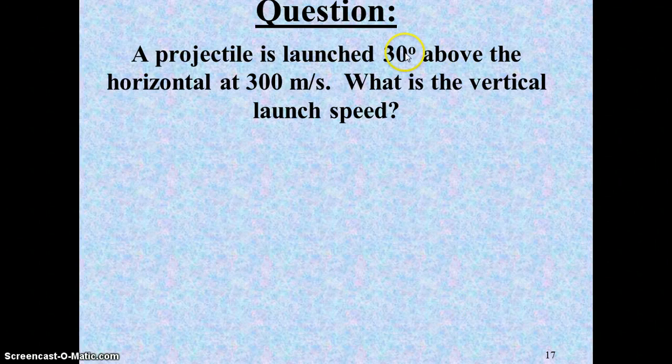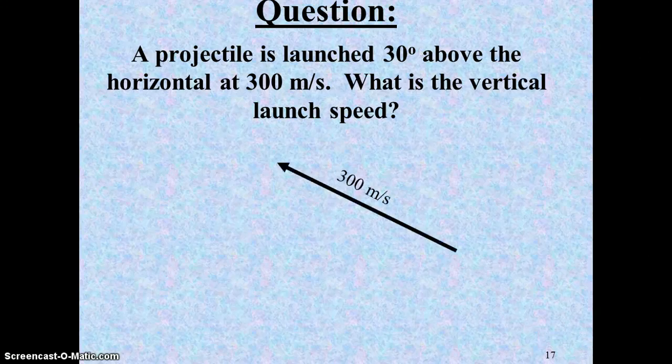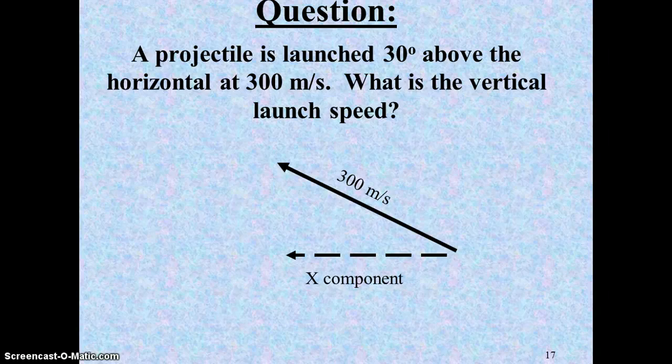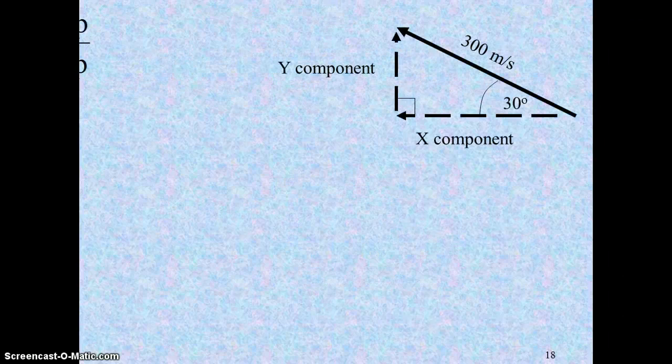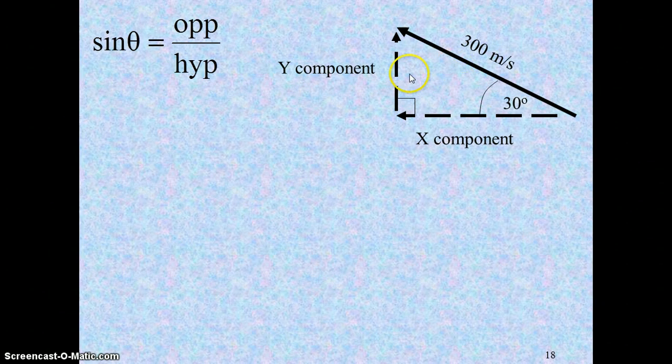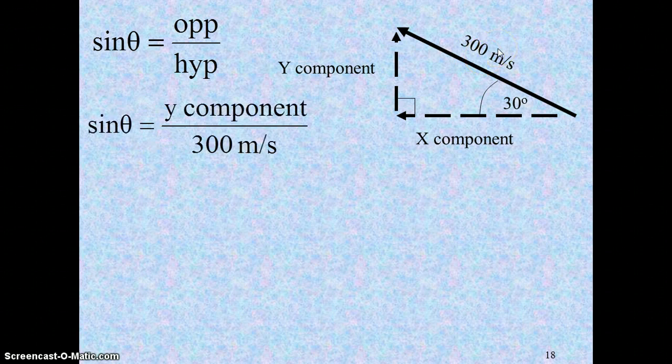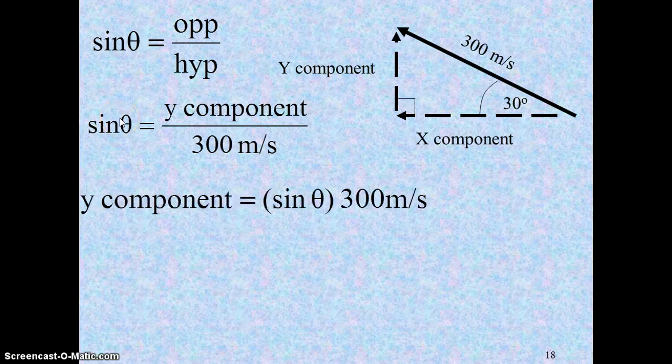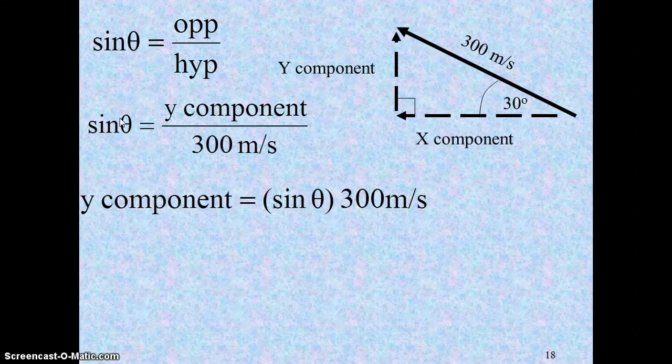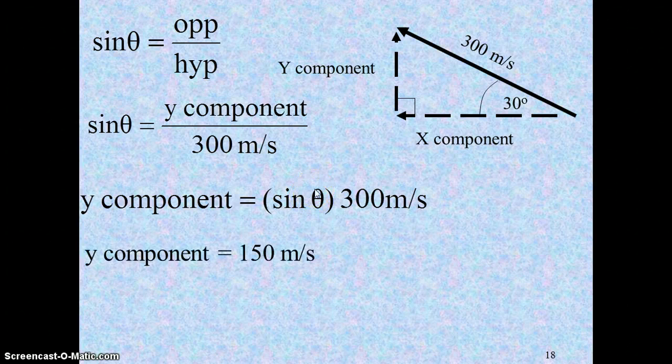So if we had an object launched at 30 degrees above the horizontal at 300 meters per second, how could we calculate the vertical launch speed? So here's our 300 meter per second launch at 30 degrees above the horizontal. There's our x and y axis. If we use that information from the previous slide, the sine of this angle is equal to the opposite. This is the y component divided by the hypotenuse, which is 300. If we plug those in to solve for the y component, I need to plug in what the sine of 30 degrees is. And the sine of 30 degrees happens to be equal to exactly 1 half. So if we take 1 half times 300, we will get the y component velocity to be 150 meters per second.